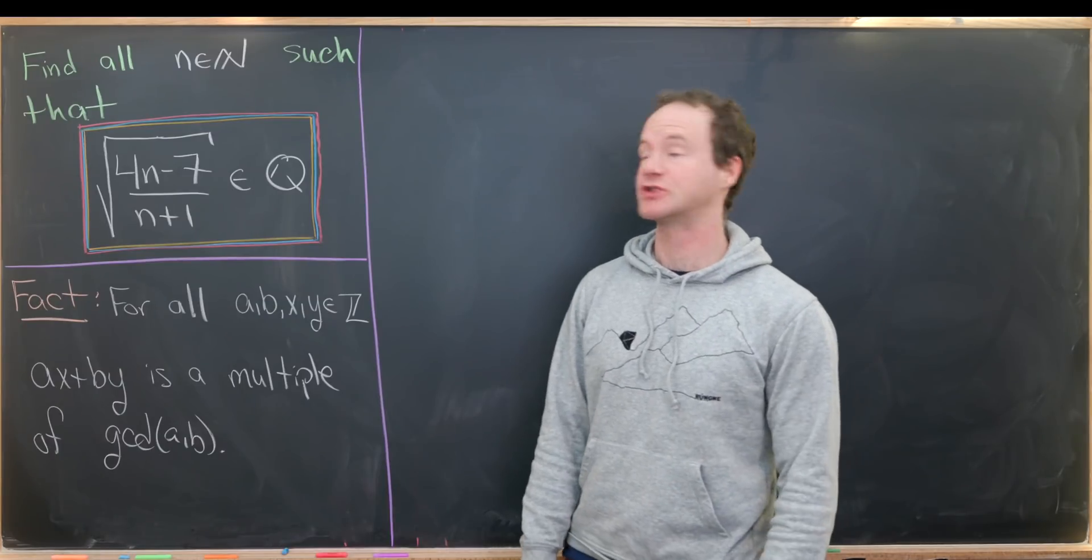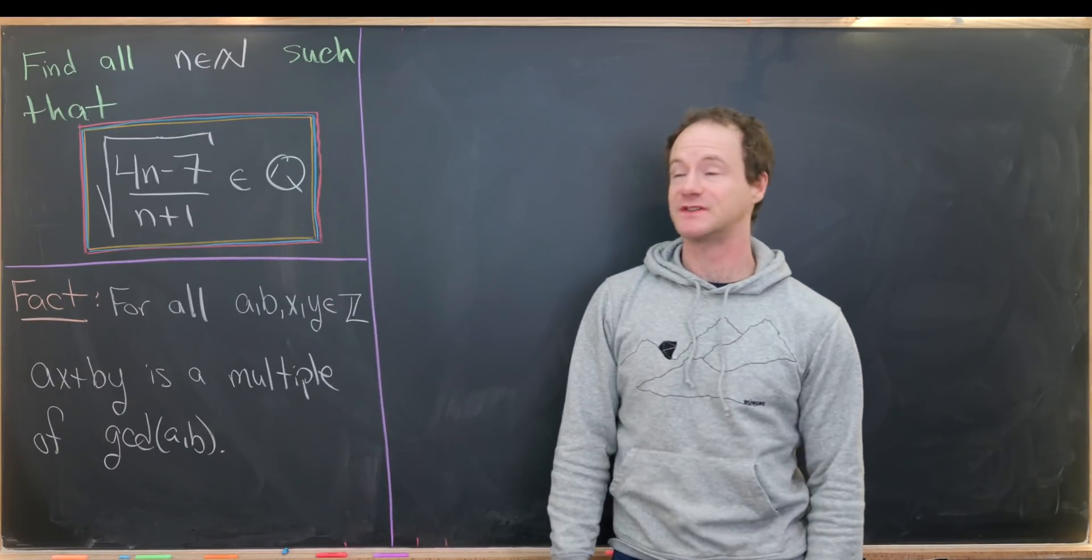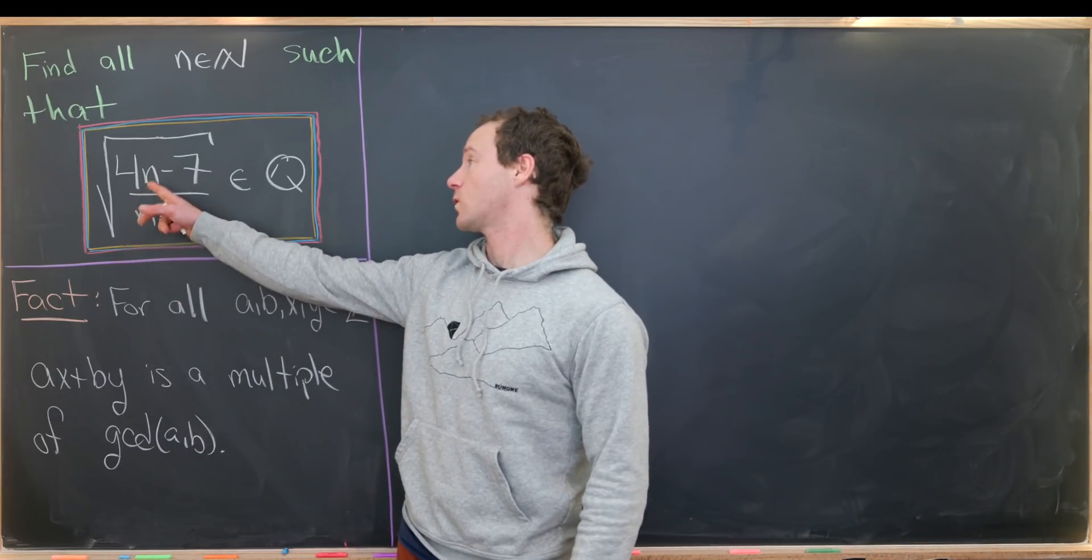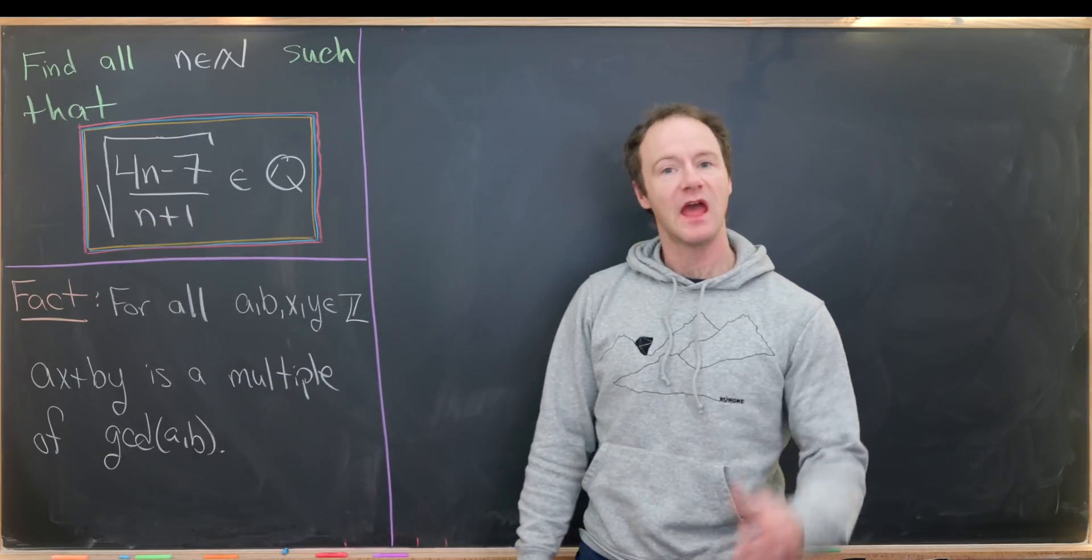Today I've got a nice number three problem to show everyone. Our goal is to find all natural numbers n such that the square root of (4n-7)/(n+1) is a rational number.